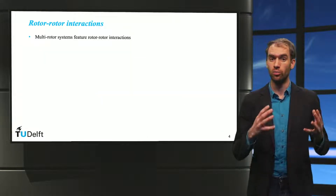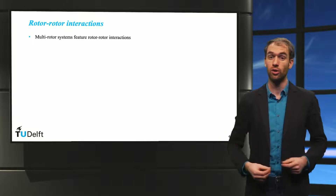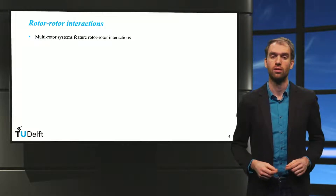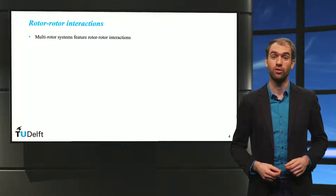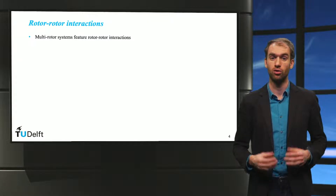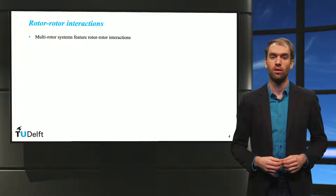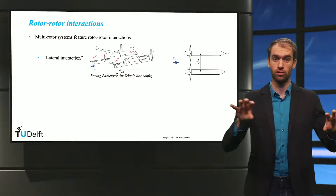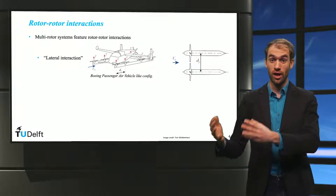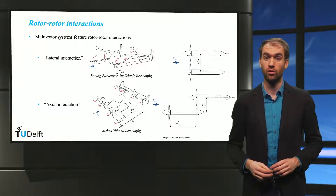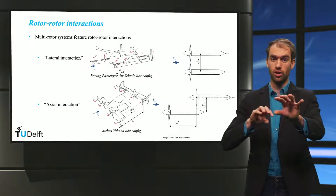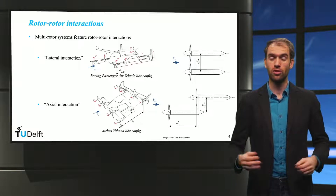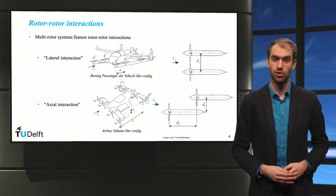For UAM vehicles with multiple rotors, the stream tubes of the different rotors will interact with each other. The resulting rotor-rotor interaction phenomena can be grouped into two categories. For the lateral interaction case, the rotors are adjacent to each other. For the axial interaction case, the rotors are separated in the streamwise direction. The interaction mechanisms for both cases are different, so let's discuss them separately.